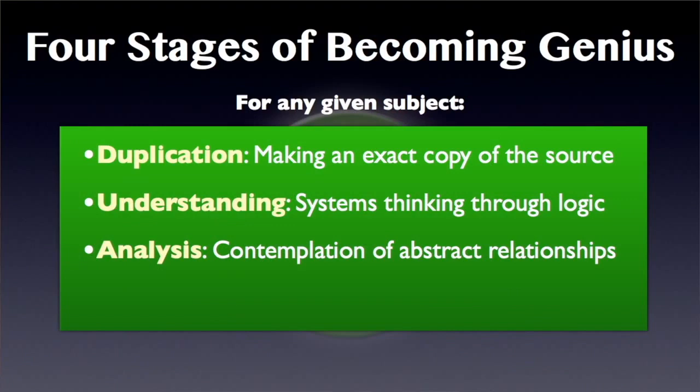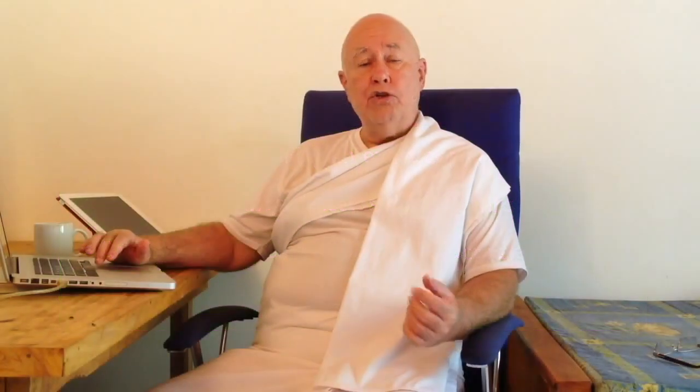You can do that too. The third stage is called analysis — the contemplation of abstract relationships. So we've duplicated the subject matter, we've made a model internally in our own mind, and now we're going to analyze that model and abstract the relationships among its pieces. This is an analysis of ontological relationships, and we're going to get to ontology in a minute.